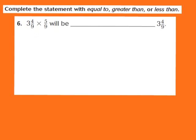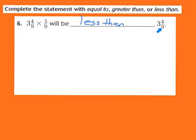I notice I'm taking 3 and 4 ninths and multiplying it by the fraction 5 ninths. I know that 5 ninths is less than 1. If I multiply a mixed number by a fraction that is less than 1, I know that the product of 3 and 4 ninths times 5 ninths is going to be less than the factor 3 and 4 ninths. I'm finding 5 ninths of 3 and 4 ninths — a part of it — so the product must be less than 3 and 4 ninths. We write down less than.